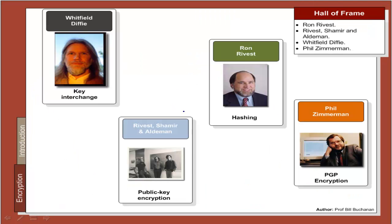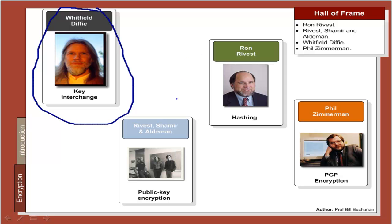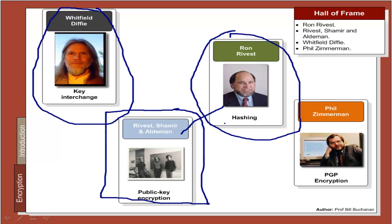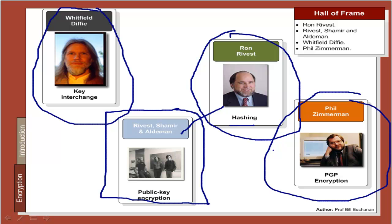The main people we will come across include Whitfield Diffie, who came up with the key interchange and could see the day when public key encryption could happen. We will look at Rivest, Shamir, and Alderman, who came up with a public key encryption method called RSA named after themselves. We will also see Ron Rivest, who advanced his work on encryption and hashing methods, and Phil Zimmerman, who created the PGP encryption method.